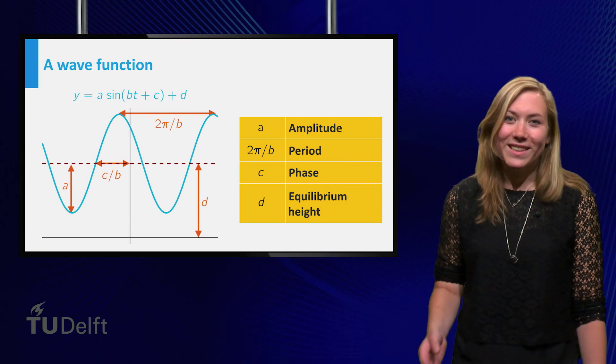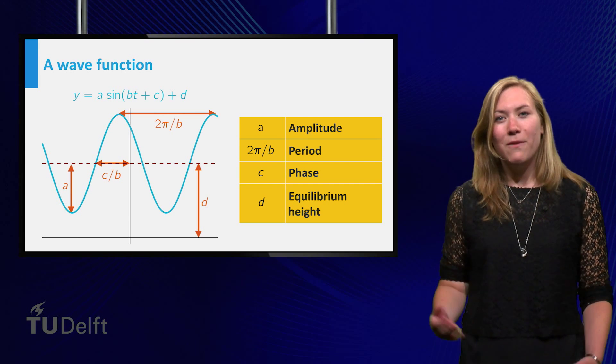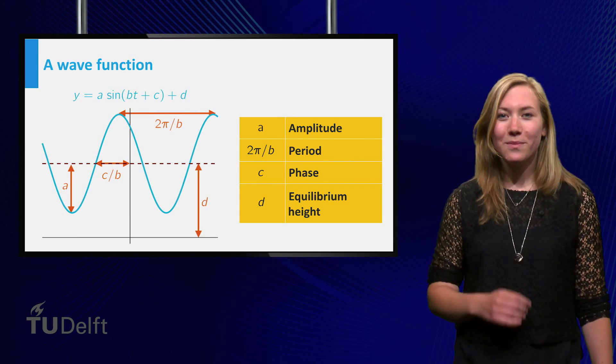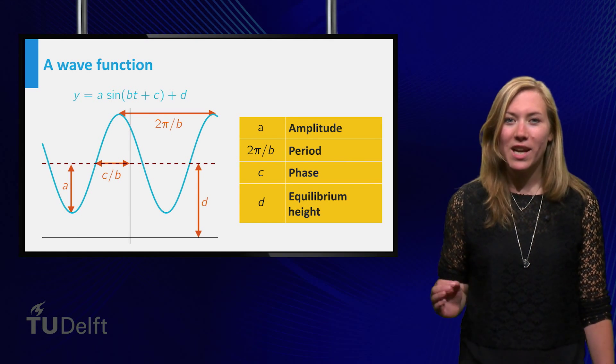The period, the distance between two consecutive maxima. The phase, which determines when the graph first passes through the equilibrium. And the equilibrium height, which is the average height of the function.